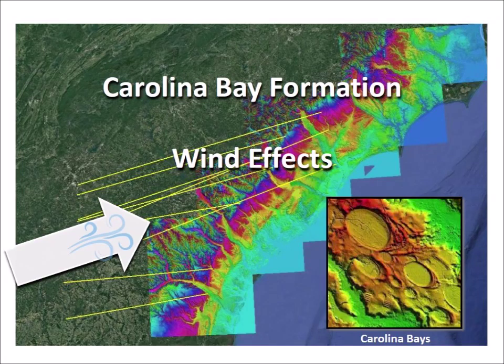The Carolina Bays are shallow elliptical depressions along the east coast of the United States. A widely accepted hypothesis proposes that the Carolina Bays were created by aeolian and lacustrine mechanisms. Although this hypothesis has failed to explain how wind and water created the precise mathematical geometry of the bays, there is ample evidence that wind did play a role in sculpting the landscape.